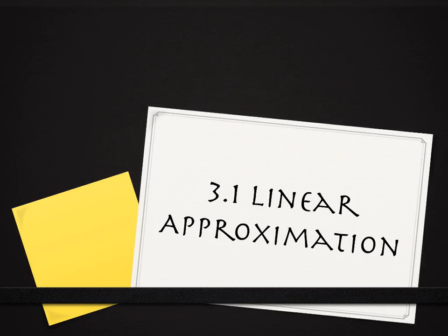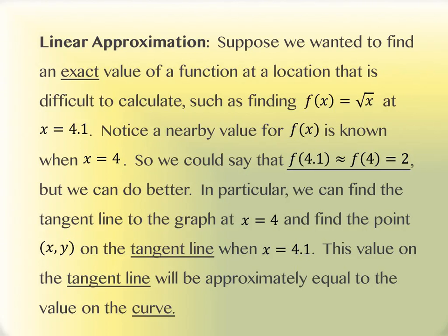Section 3.1 takes a look at something called linear approximation. The first thing we'll do is talk about what a linear approximation is. Linear approximation says something like this: suppose we wanted to find the exact value of a function at a location that's difficult to calculate. For instance, let's say you wanted to calculate the square root of 4.1.